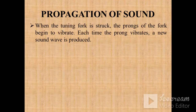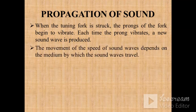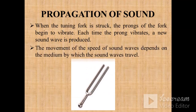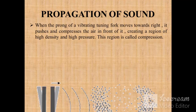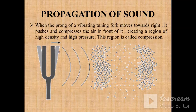A familiar example to demonstrate how sound is produced: when a tuning fork is struck, the prongs begin to vibrate. When struck with a rubber pad, the prongs start to vibrate. The speed of sound waves depends on the medium — sound travels fastest in solids, a little slower through liquids, and slowest through gases.